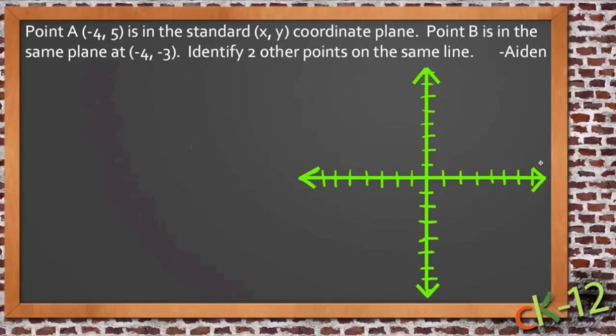So on the x-axis it's at negative 4, 1, 2, 3, 4, and on the y-axis it's at 5, 1, 2, 3, 4, 5. So point A is right here, negative 4, 5.